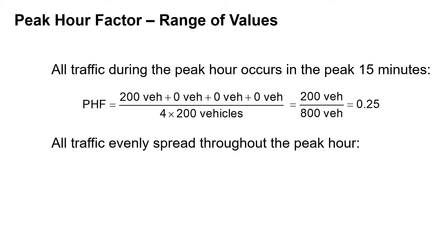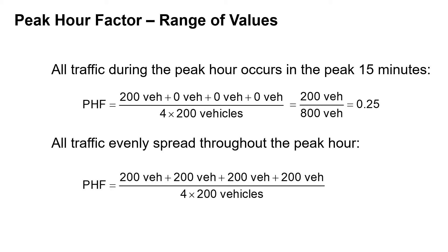On the other end of the spectrum, we can have all traffic evenly spread throughout the peak hour. Let's assume the same 200 vehicles — 200 vehicles in each 15-minute interval. So 200 plus 200 plus 200 plus 200 divided by 4 times 200 gives us 800 over 800, which equals a peak hour factor of 1. So that's the maximum value of the peak hour factor.